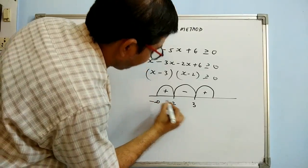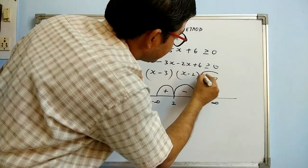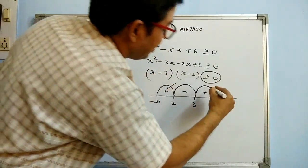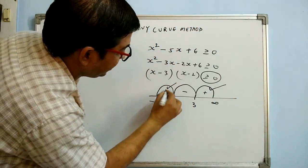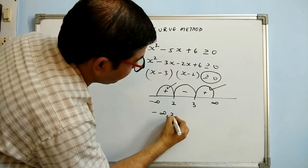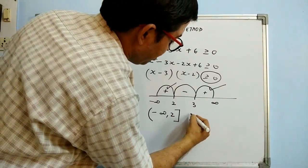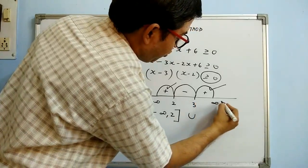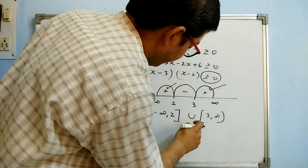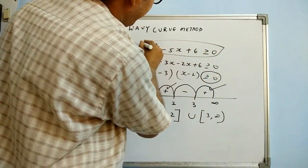At the extreme left always write minus infinity and at the extreme right always write plus infinity. Since we need the expression to be greater than or equal to 0, meaning positive, we pick the positive intervals. So x lies in (-∞, 2] union [3, +∞) — infinity is always exclusive, but 2 and 3 are inclusive because of the equal-to sign.